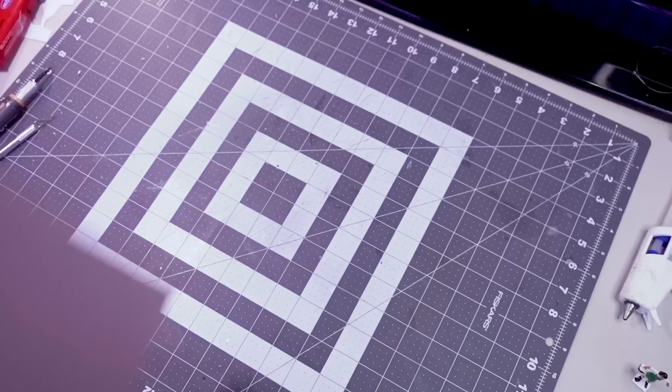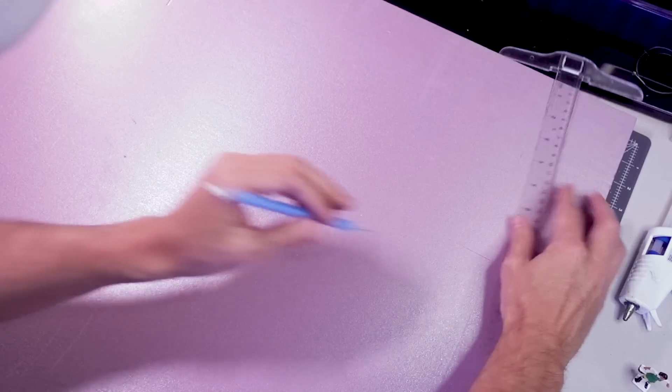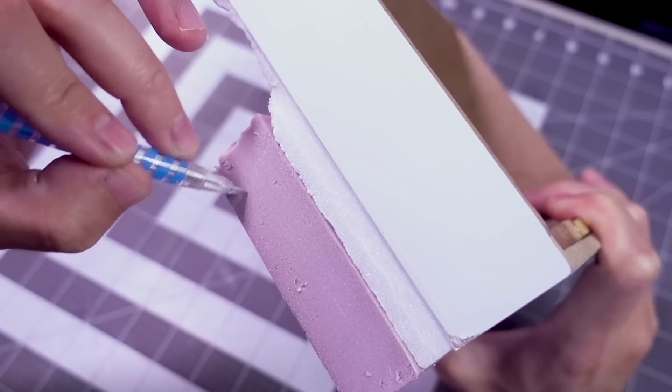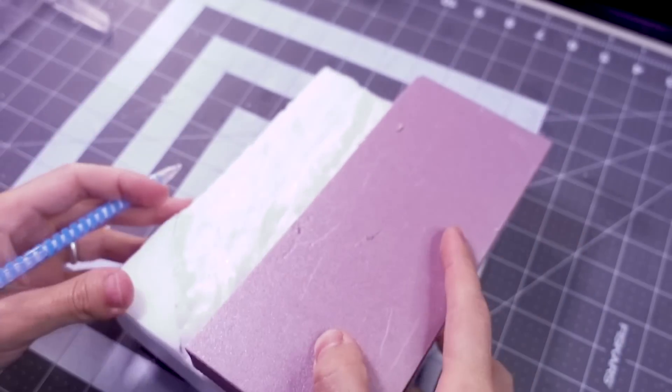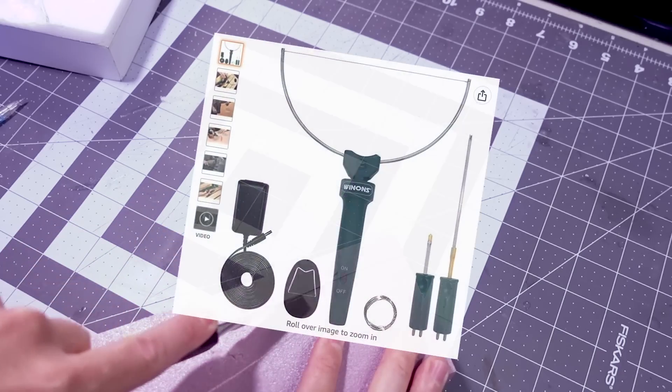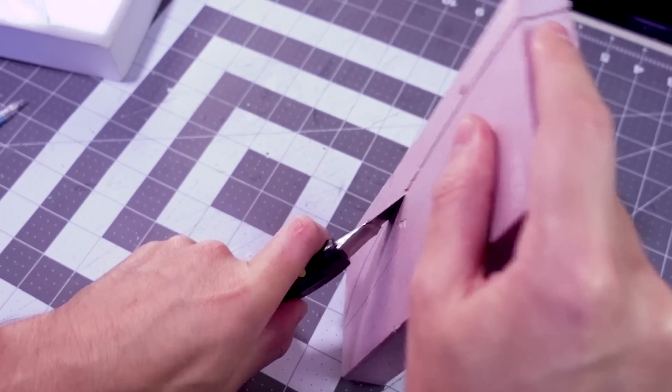Another brand new material for me was this 1-inch XPS foam. This is a construction material you can find in your local hardware store, but it's often used by model makers to sculpt terrain. This sculpting is typically done with a hot wire tool, but mine still hadn't arrived by this point, so I was forced to hack at it feebly with this razor knife.